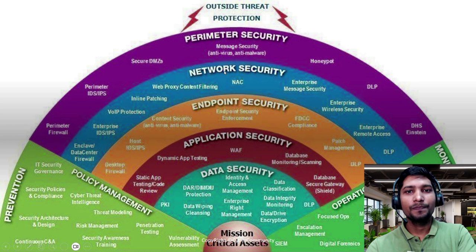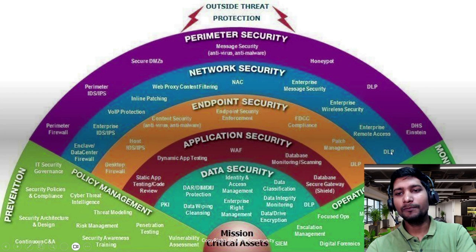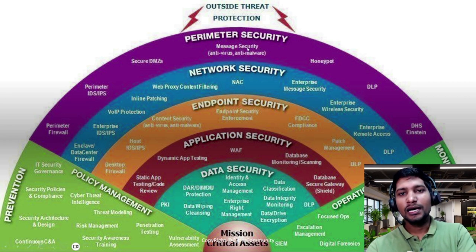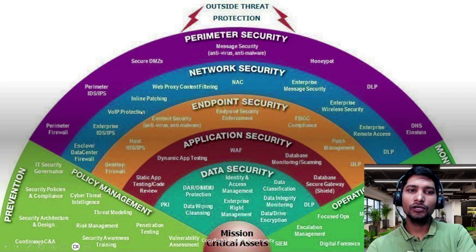At the next level — network security — you can see enterprise message security, enterprise wireless security, everything related to the network. DLP is also available here; when you set the rules in DLP, it applies to perimeter, network, and endpoint as well. At the network layer there is VoIP protection, web proxy, and content filtering.